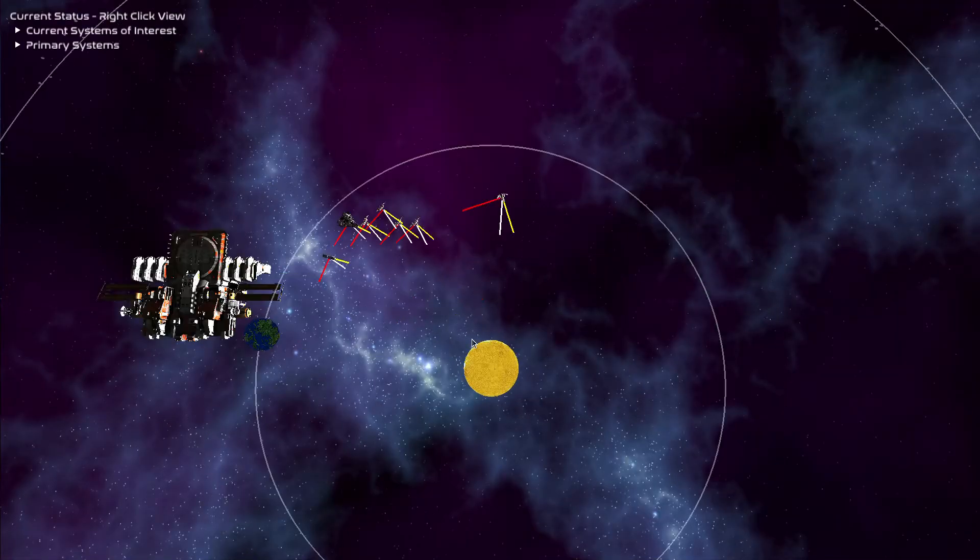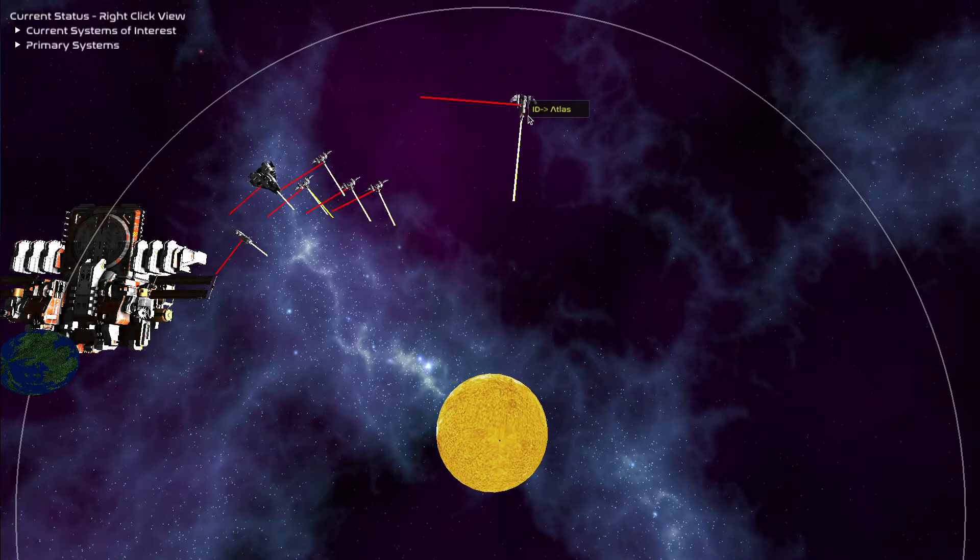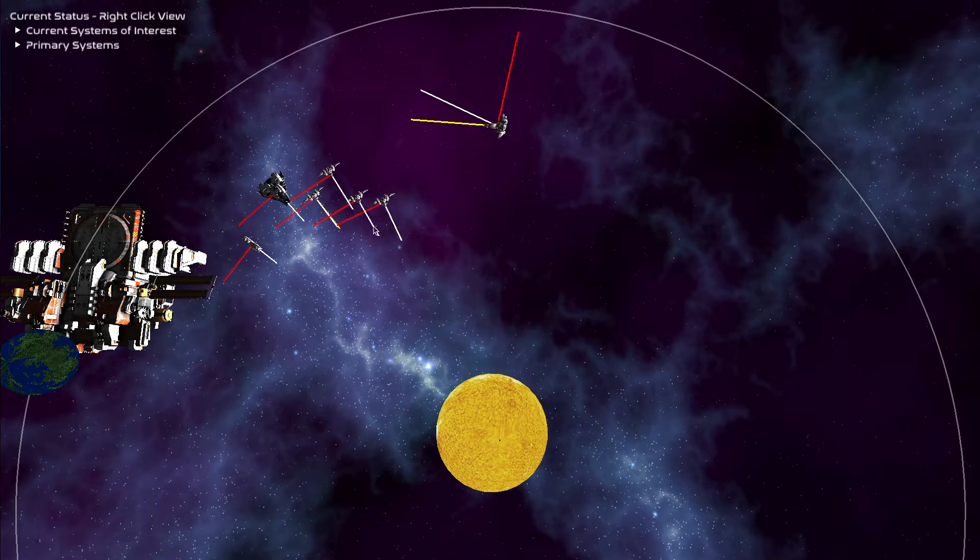This is your tactical view. It allows you to review the disposition of your assets inside a solar system. Any other vessels which are detected are also shown.